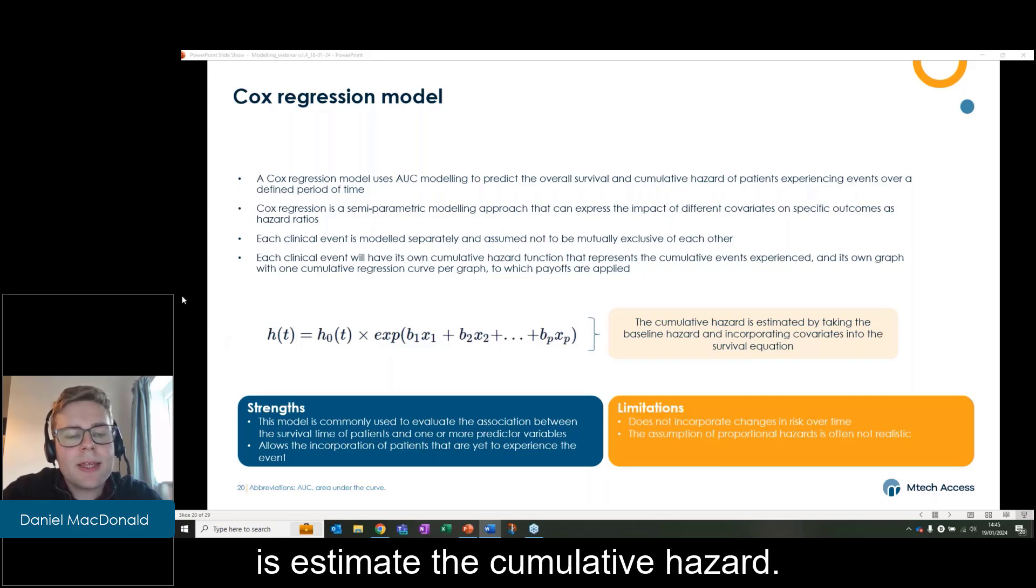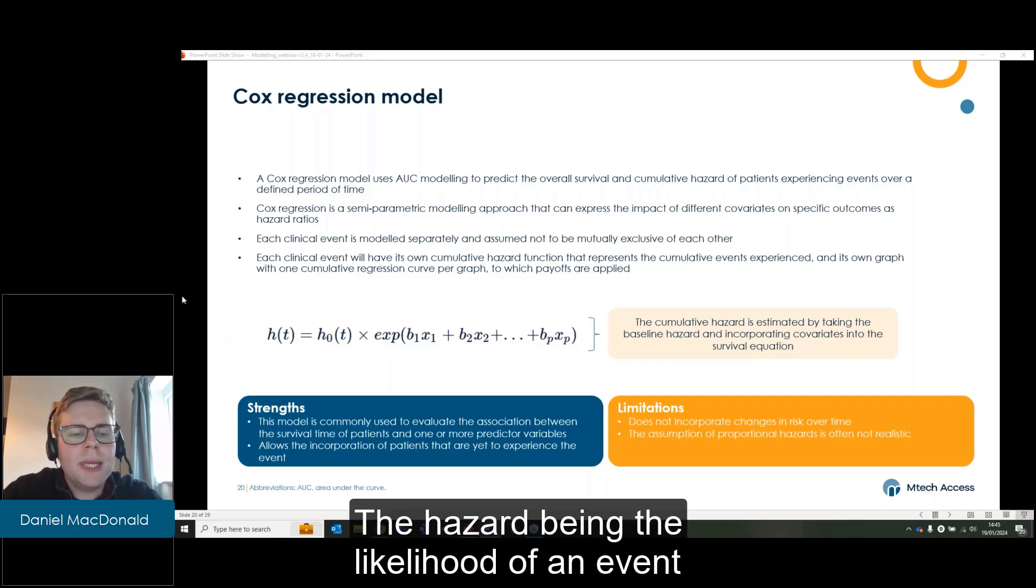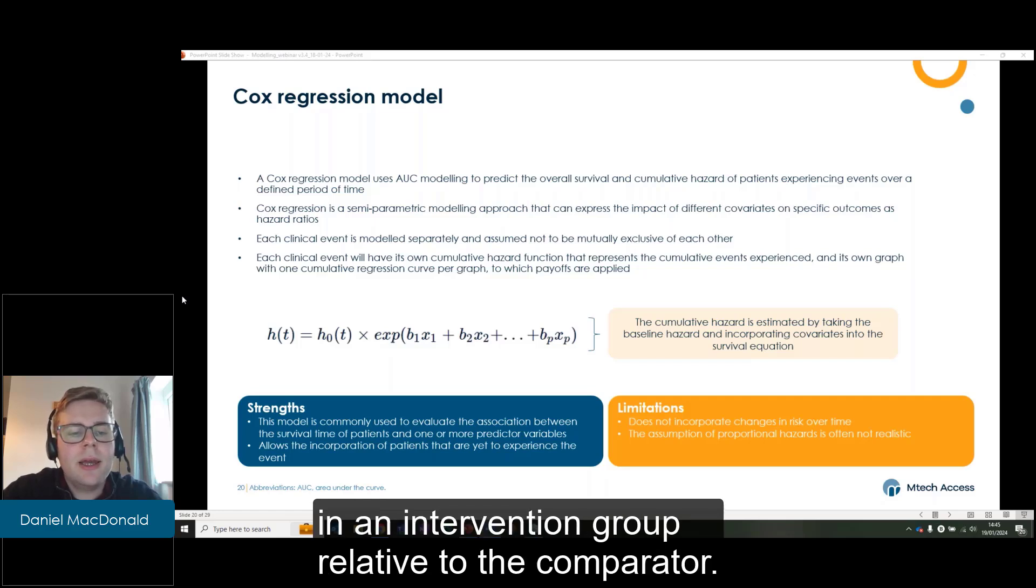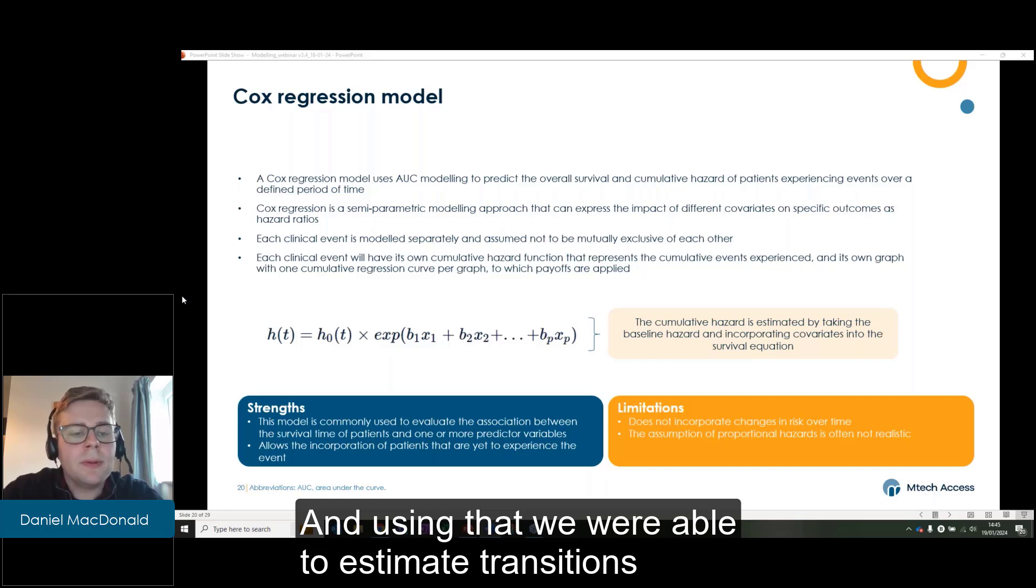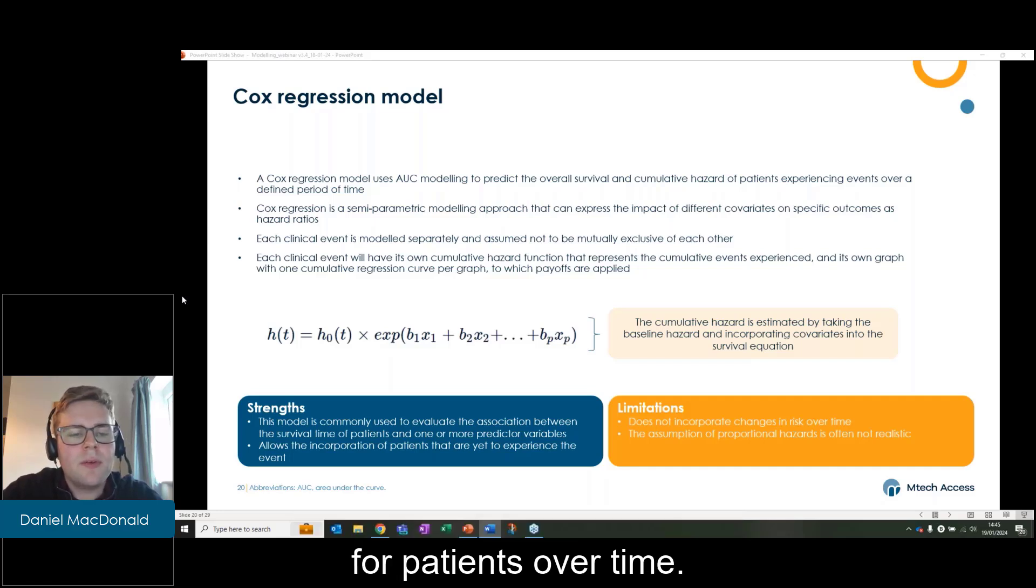And then what we were able to do is estimate the cumulative hazard, the hazard being the likelihood of an event in an intervention group relative to the comparator. And using that, we were able to estimate transitions for patients over time.